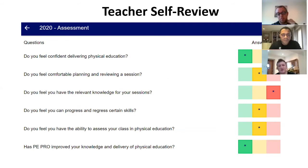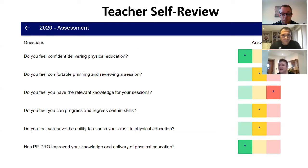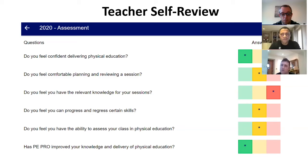There is also a teacher self-review feature. To get high quality sessions and impact every child, we monitor through teachers. Teachers self-review at week one, week 18, and week 36 across areas like confidence, comfort with planning, knowledge, progression and regression, and ability to assess. This allows us as PE leads to look across all teachers and identify where, for example, 50% of teachers show adequate knowledge but are struggling with progression and regression — so we can address that in programme design.